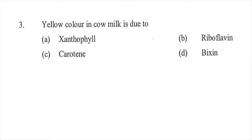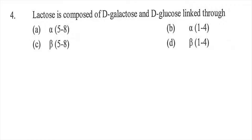Question number three: Yellow color in cow milk is due to — option A xanthophyll, option B riboflavin, option C carotin, or option D bixin. The right answer is option C, carotin. Question four: Lactose is composed of D-galactose and D-glucose linked through which bond?